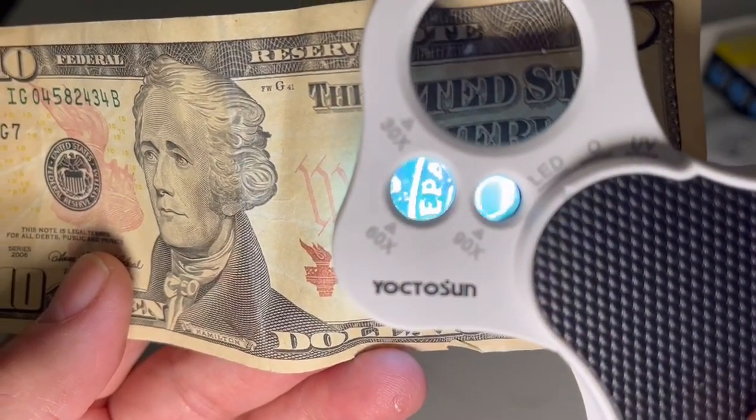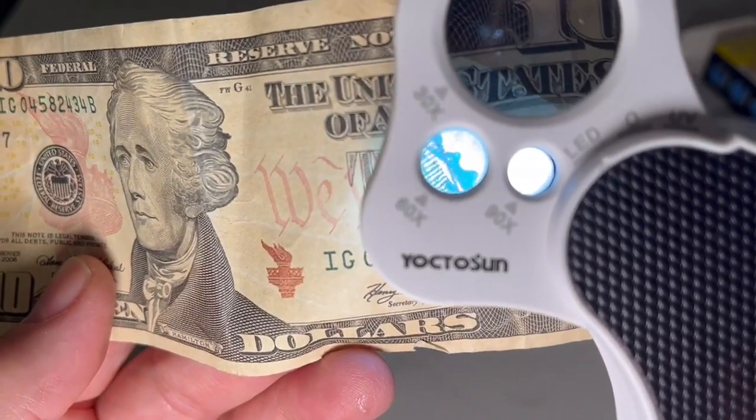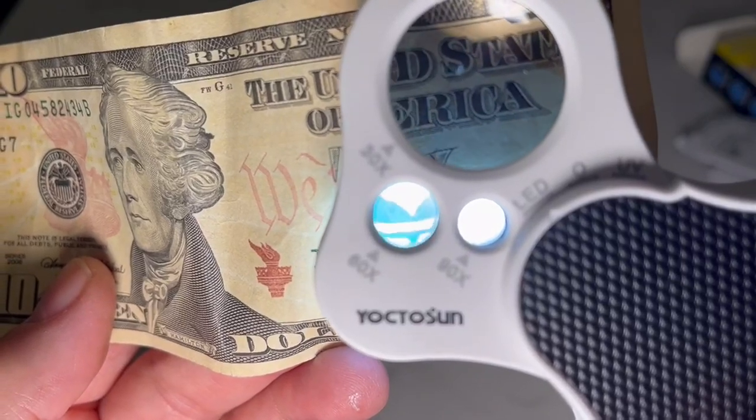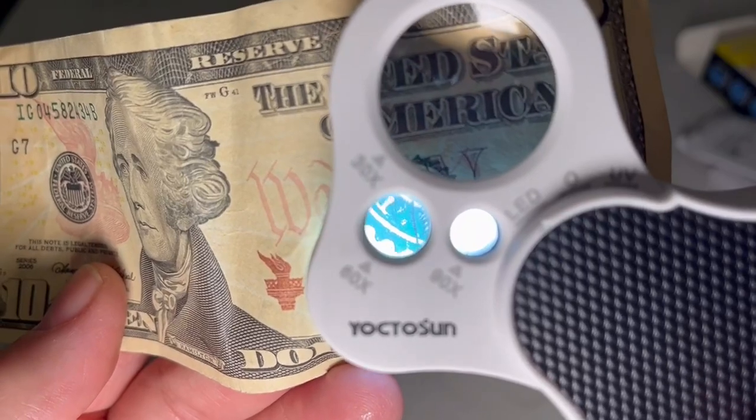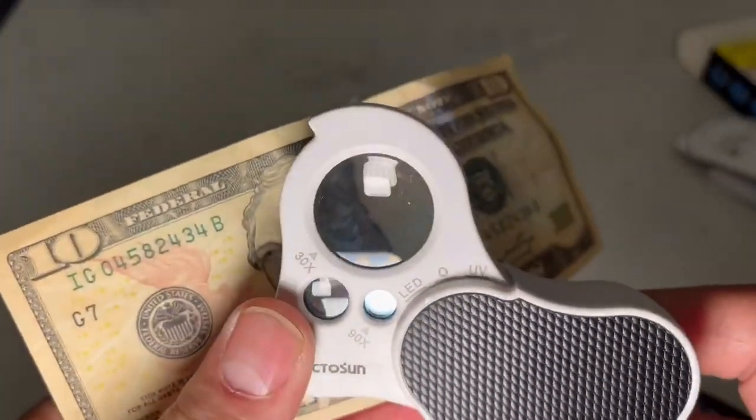But sometimes if I want to get a little bit closer, I'll use the 60. To me, the 90 power lens is just too difficult to use for me. I don't know if it is for everybody, but it is pretty small and hard to use.